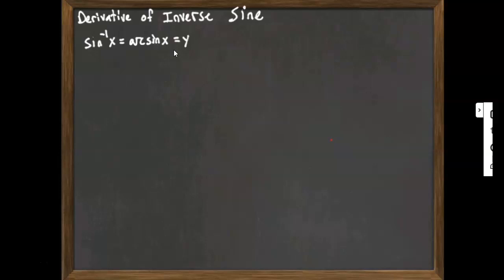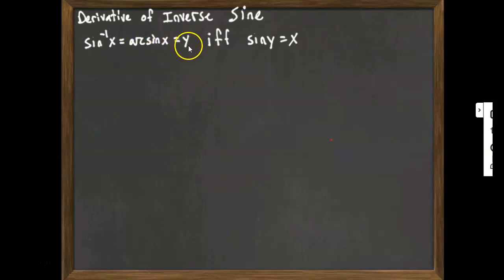Now, if this thing is equal to y — either inverse sine of x or arc sine of x equals y — that's true if and only if sine of y is equal to x. That's what it means to be the inverse: the inverse is asking what angle will give a sine of x. In other words, sine of what angle will give you x? For example, arc sine of 1/2: what angle would you need to apply sine to in order to get 1/2 as an answer? Or square root of 3 over 2? Or square root of 2 over 2? Or negative 1?